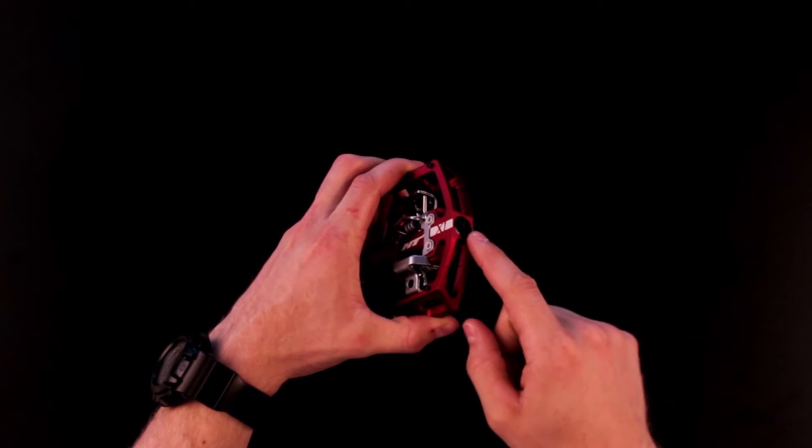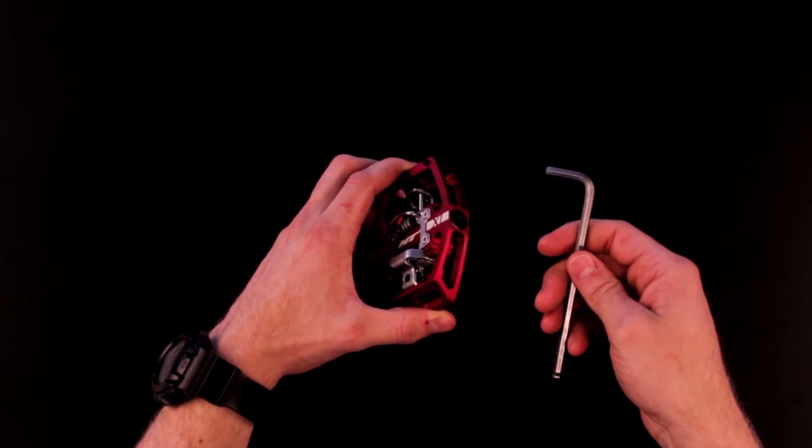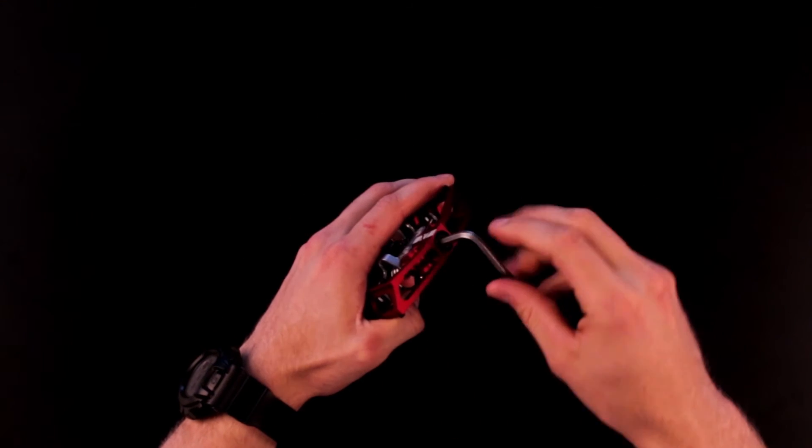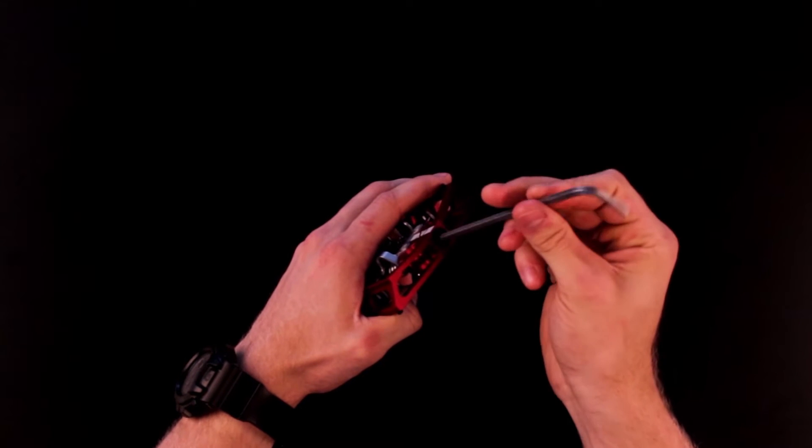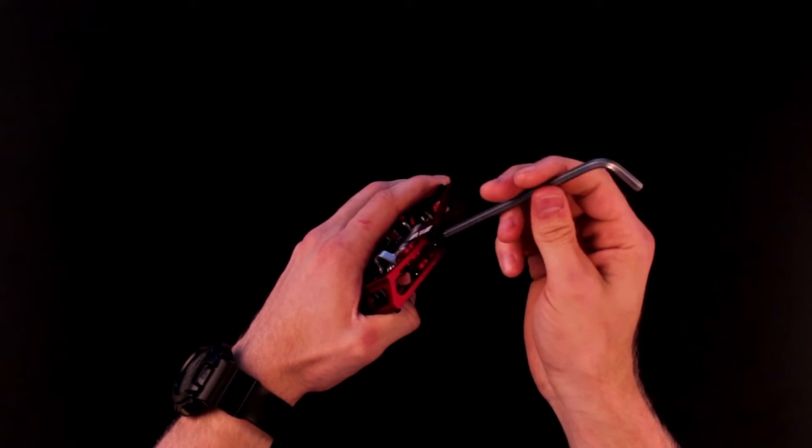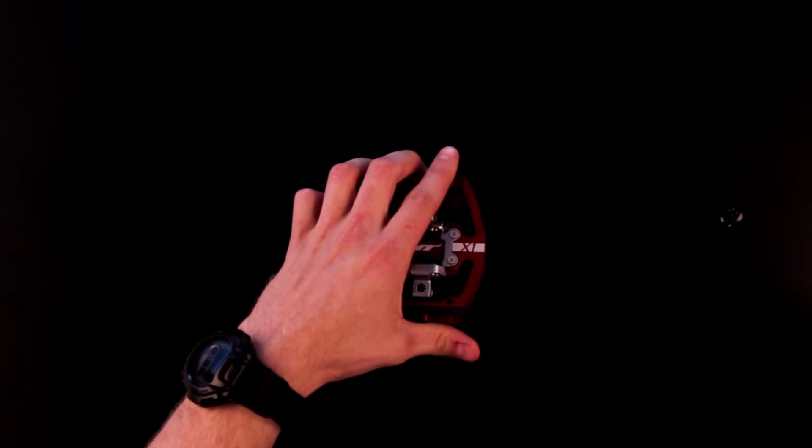First of all you need to remove the end cap. To do this you'll need to use a 5mm Allen key. Simply turn the Allen key in an anti-clockwise direction and it will slot out quite easily. Put it to one side so make sure you don't lose it.